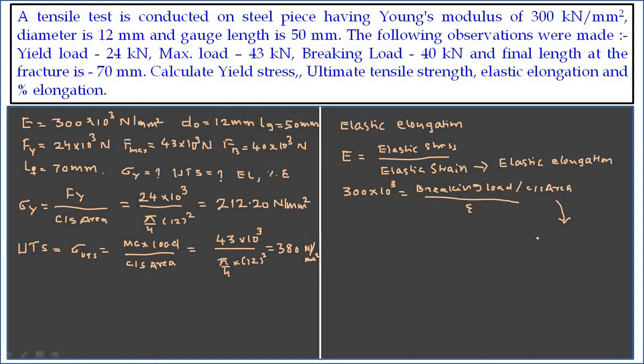So that is nothing but which is equal to 40 into 10 raise to 3, again divided by the cross-sectional area, that is pi by 4 into 12 square. So when you calculate, it comes out to be 353.6 Newton per mm square.